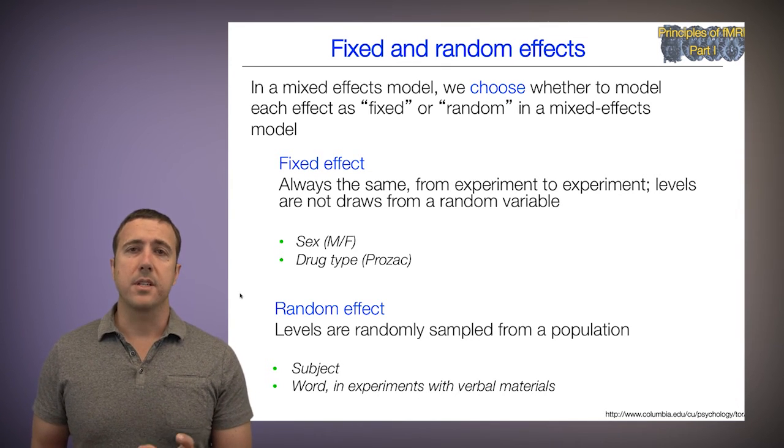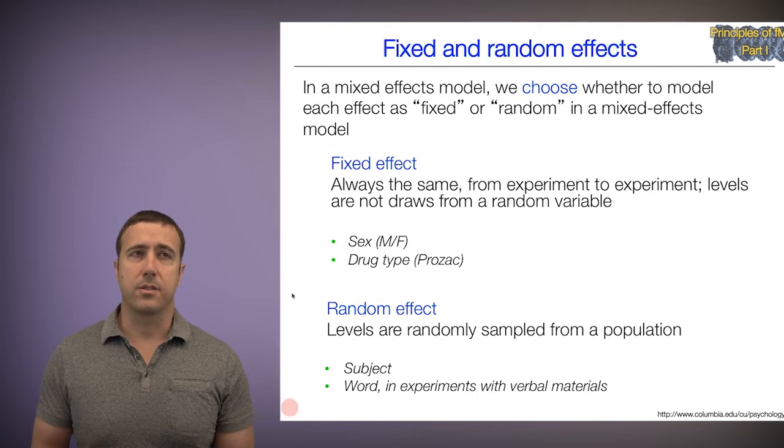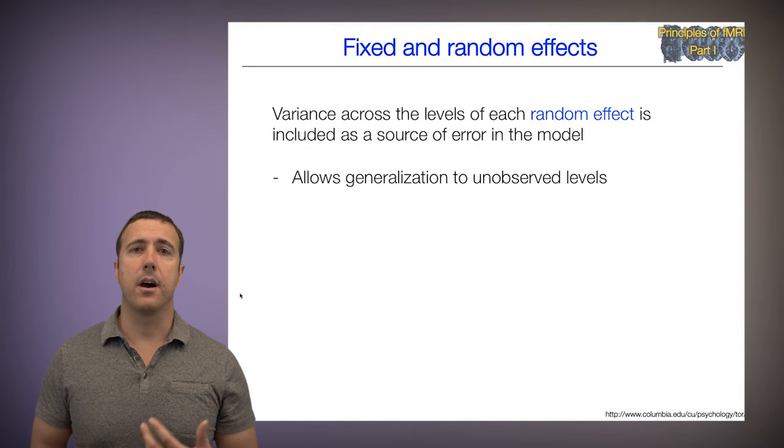One of the key points is, in a mixed effects model, we choose whether to model each effect as fixed or random. So here are the implications of that choice. The variance across each level of a random effect is included as a source of error in the model. So when I construct a t-statistic, I take the estimate of the effect divided by its standard error, and that standard error includes variability from individual to individual, or from level to level, of anything that I've modeled as a random effect. And this allows us to generalize to unobserved levels.